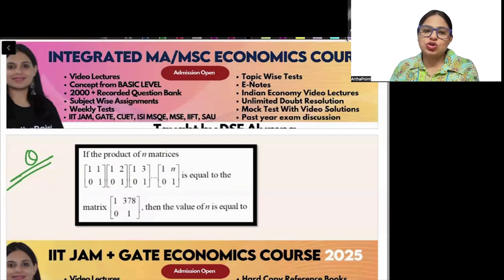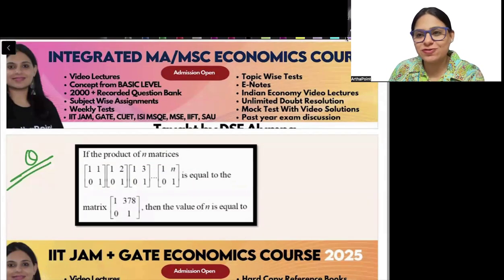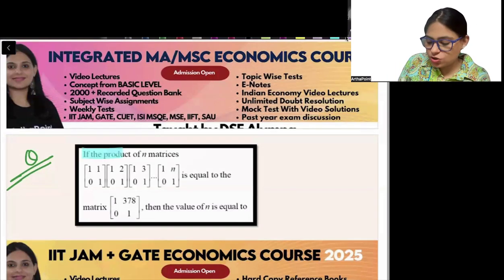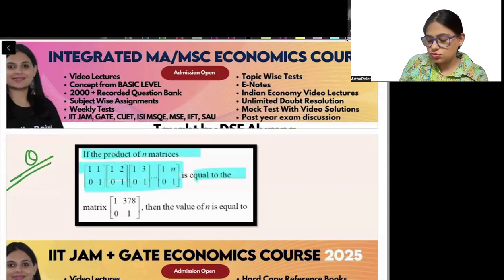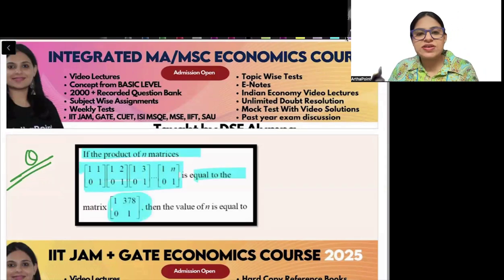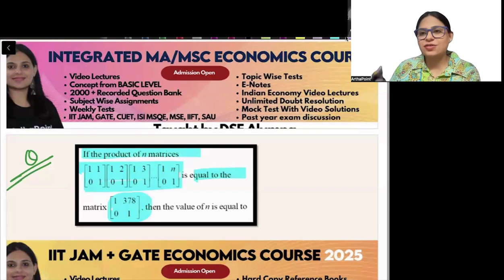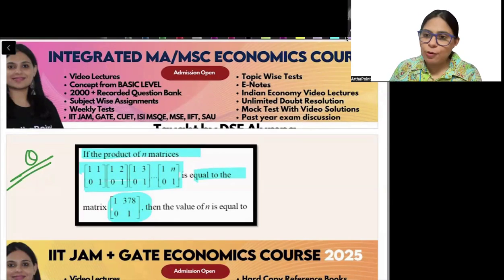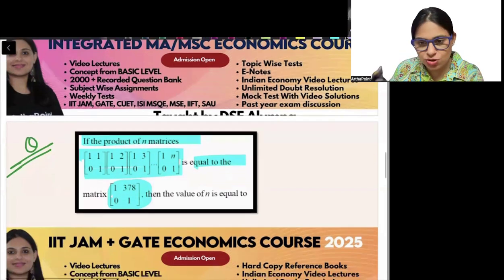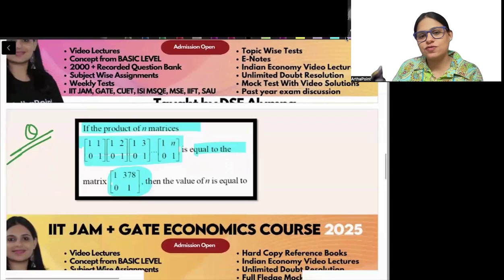I made this one a bit more difficult — I removed the options. You are given the product of N matrices, where each matrix follows a pattern, and the product equals [[1, 378], [0, 1]]. Find the value of N. Try to do this yourself, then I will solve it.